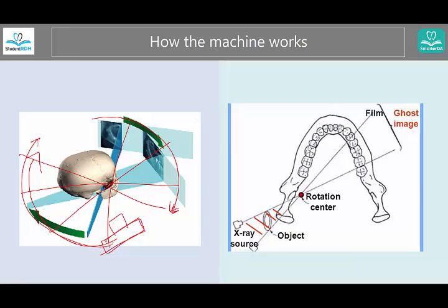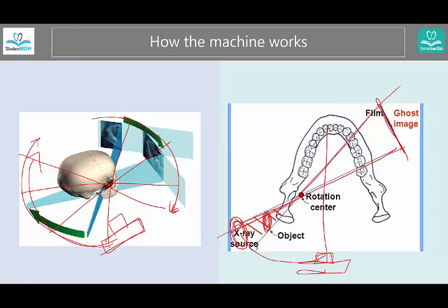The x-ray source is over here, and when it penetrates the oral cavity and goes to the other side, this is where you're going to have the image. But if there's an object in the way, it's going to be represented on one side but also magnified on the other side. This happens if the x-ray penetrates two sides of the oral cavity. If the tube head only penetrates one side, you wouldn't have a ghost image.